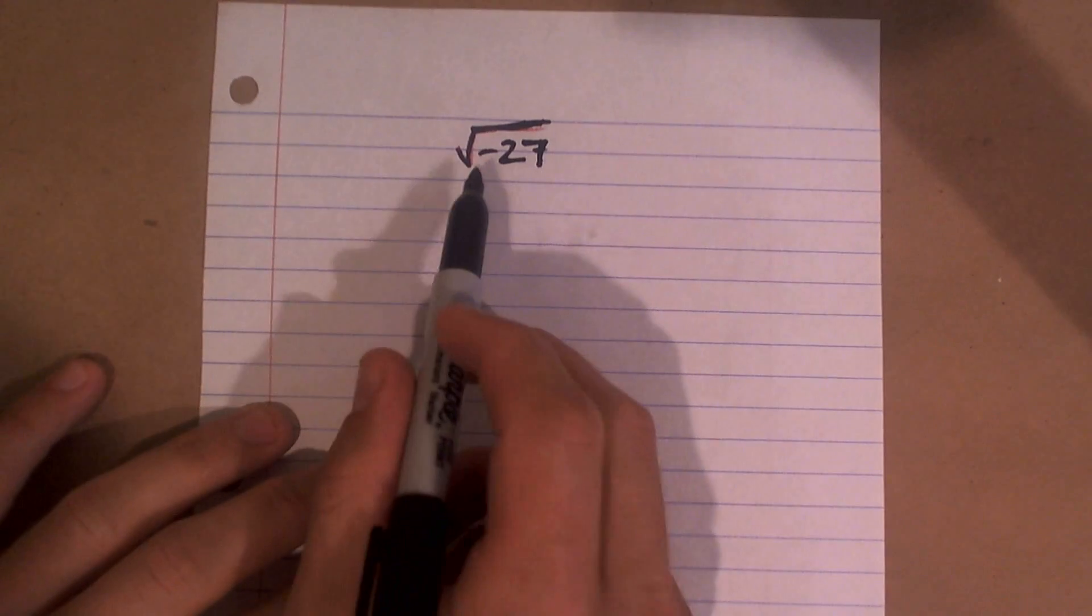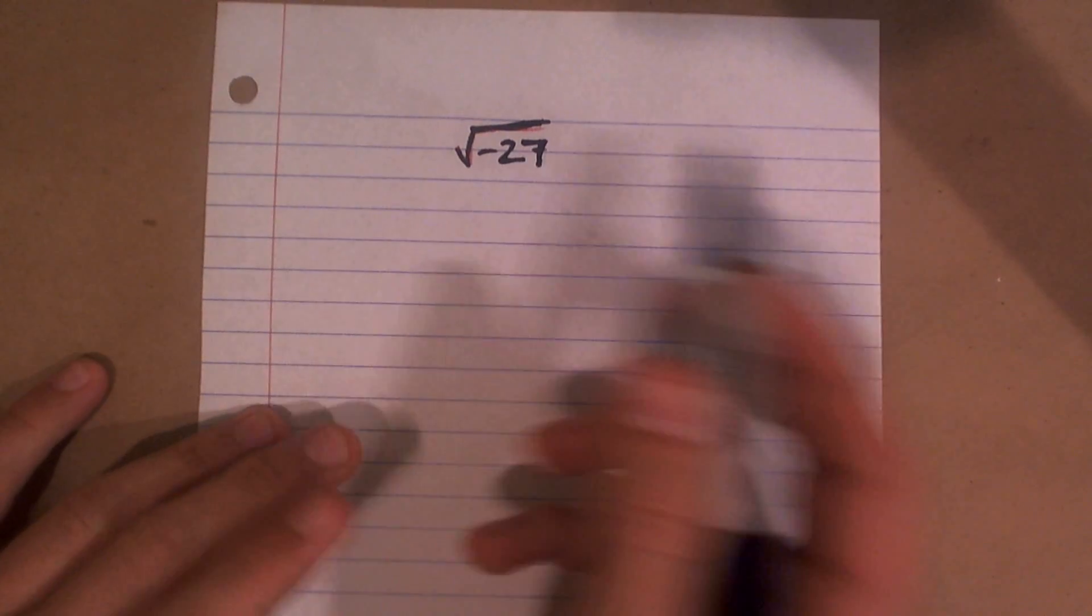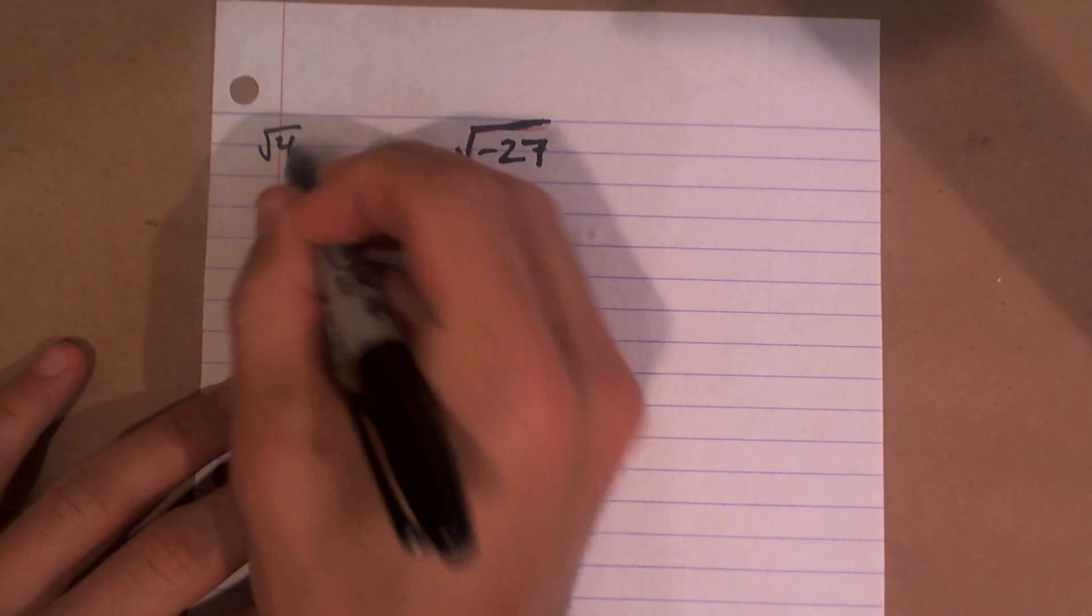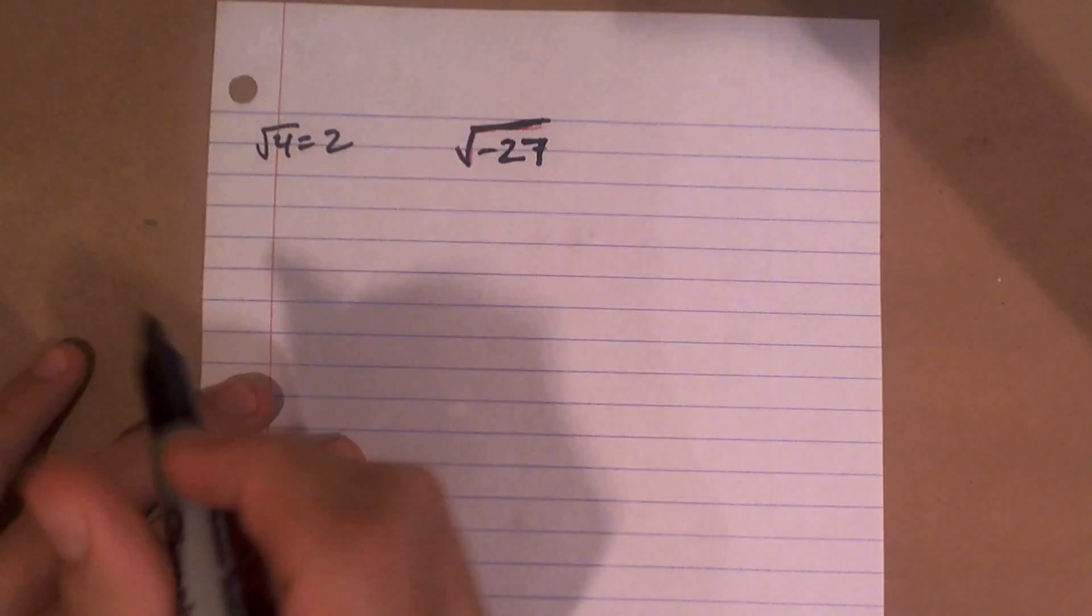One thing we notice is we can't take the square root of a negative number. Remember, the square root of 4 means 2, meaning that 2 times 2 equals 4.